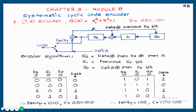Now verify the generator polynomial, which is x³ + x² + 1. Between the MSB and LSB there is an x² term. For this x² term, you give this feedback. So when x² is present, there is a feedback connection between S1 and S2. If x is present, there is a feedback between S0 and S1.